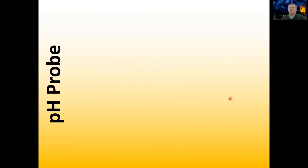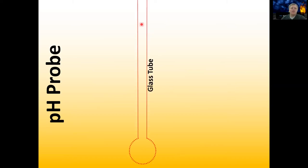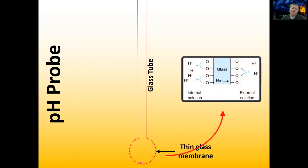Now let's move on to another type of probe — the pH probe. Believe it or not, the pH probe is actually functional on reduction-oxidation reaction principles. The way a pH probe works is we start with this glass tube, and at the bottom we have a very thin membrane. This is where most of the magic happens in our probe.